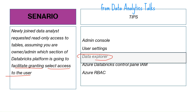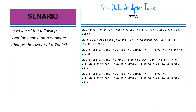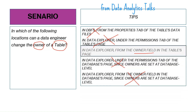Scenario ten: in which location can a data engineer change the owner of a table? The options include DBFS properties tab, Data Explorer under the permissions tab of the tables page, Data Explorer from the owners field in the tables page, and Data Explorer under the permissions tab of the database page. The correct answer is: Data Explorer, from the owners field in the tables page.